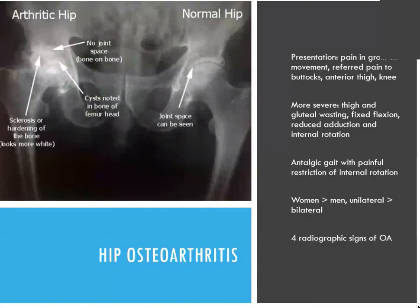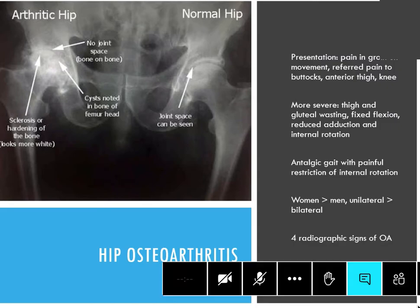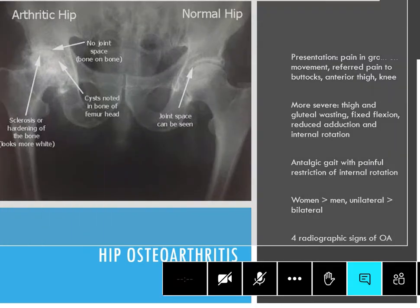Moving to the other age end of the spectrum, you've got osteoarthritis of the hip. It's good to remember those four radiographic signs of osteoarthritis — three are shown on the image here, and the fourth one would be osteophyte formation. Otherwise the history and clinical features are all there for you, and it's another one that's good to pick up on the imaging if they give you any of that.